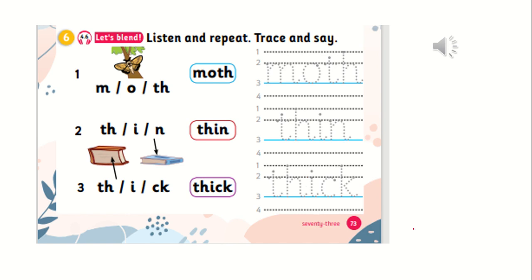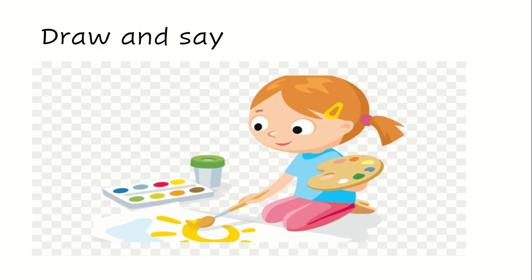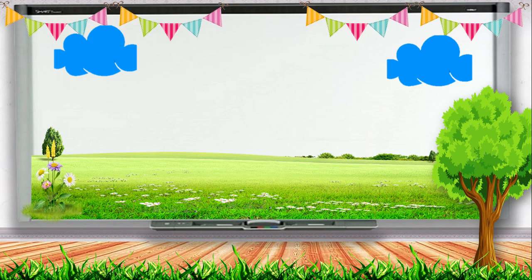Now can you write these words? Good. Now my students, let's make a race between girls and boys. I want one boy and one girl. We are going to draw something we learned today — for example, moth, or three, or thorn. You are going to guess what your friend is drawing. Are you ready? Good. So that's all for today. Goodbye.